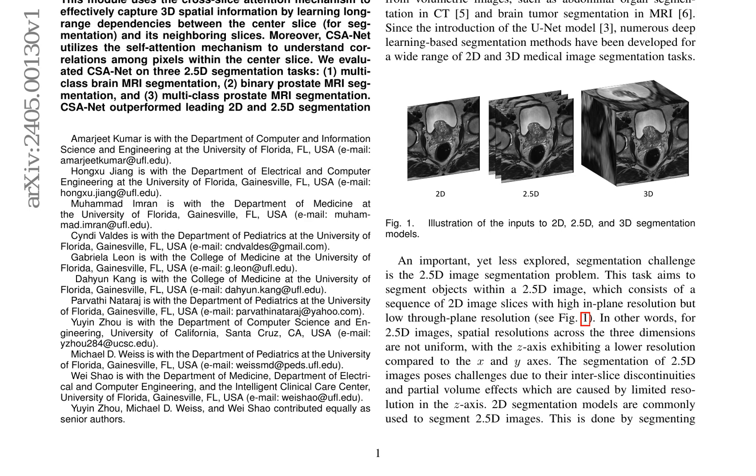CSA-NET takes a center slice and its two neighboring slices as input to predict the segmentation map for the center slice. The CSA module computes an attention score between each pixel in the output feature map of the center slice and each pixel in the output feature map of the neighboring slice, as formulated in equation 1. Multiple attention heads are used to capture different types of relationships between the center slice and the neighboring slice.